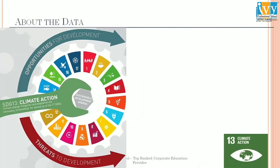Moving along to the data — before we come across the details of the data, we must know that climate action, which is the 13th goal among the 17 Sustainable Development Goals of the United Nations, is a pretty obvious and pressing factor in recent times. This is a time series data on methane emissions. We call data time series data when a collection of observations for a single subject — here it is methane emissions — at different time intervals is collected.